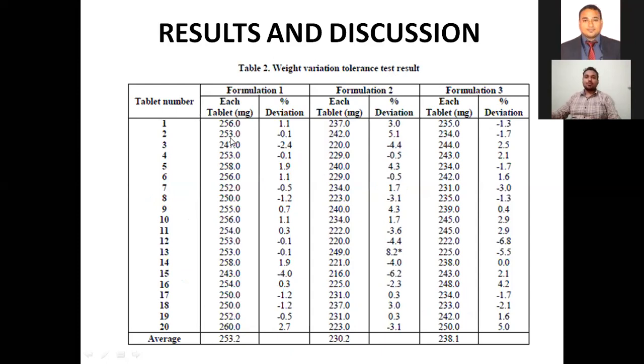The deviation is 1.1 and minus 0.1. This preparation is for 250 mg tablet. It shows the deviation 256, that means 6 mg is more, which shows the percentage of deviation 1.1.